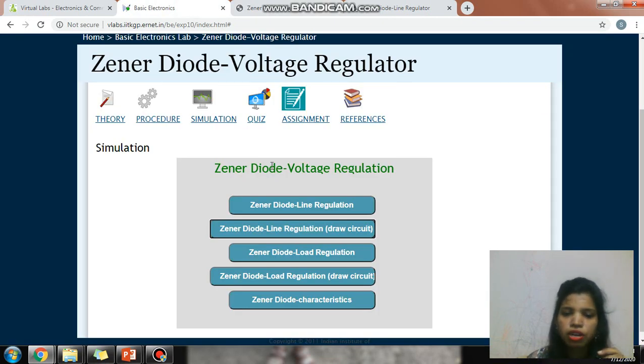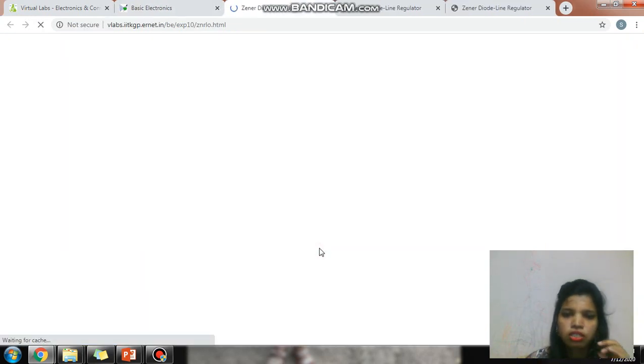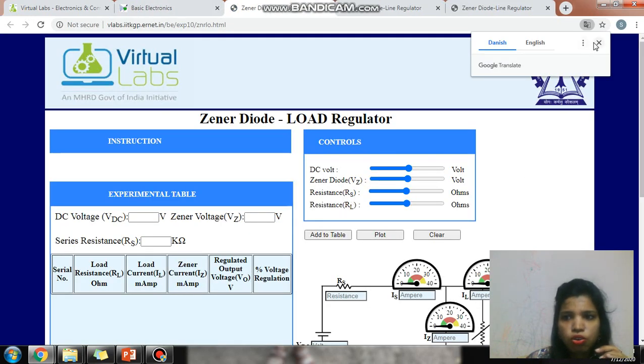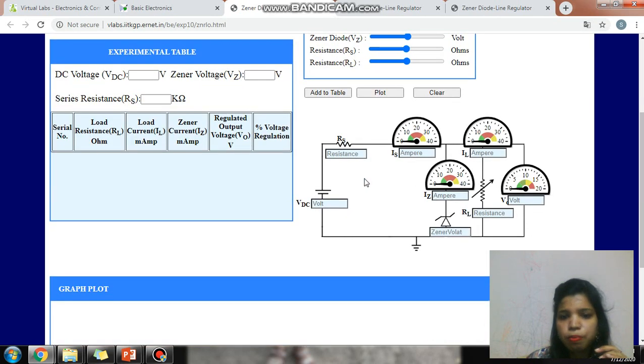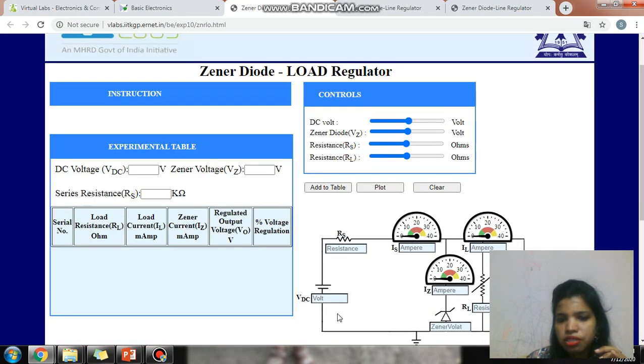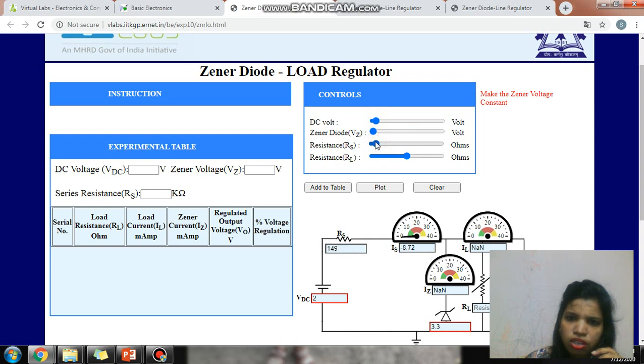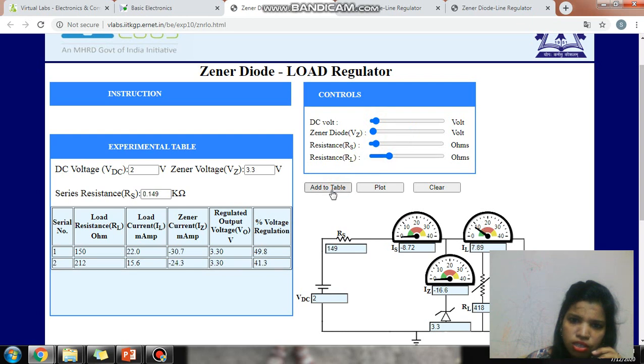After that, the process is the same. Next is Zener diode load regulation. Click on Zener diode load regulation. In load regulation, now the case is opposite. The input is fixed, means the supply is fixed, source resistance is fixed, now we are varying the load resistance. First, fix all the values as per your convenience.